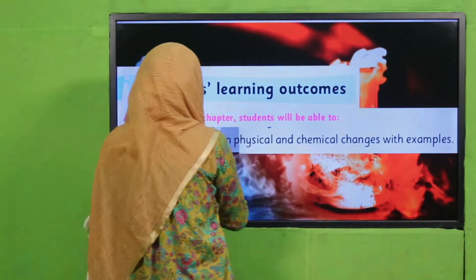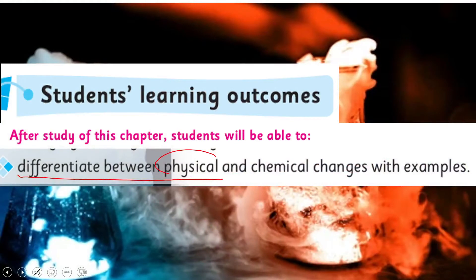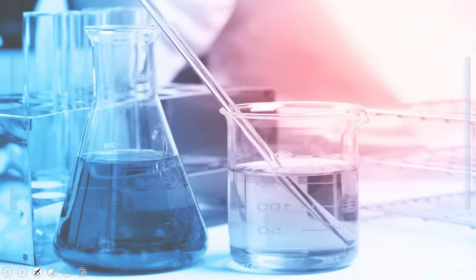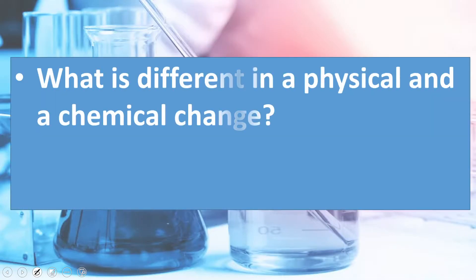In today's lecture, students will be able to differentiate between physical and chemical changes with examples. Ab main aapko ek pictorial activity ke through dono ke differences bataye hain — physical aur chemical changes mein. Now let's quickly move forward towards the pre-reading: what is different in physical and chemical change?